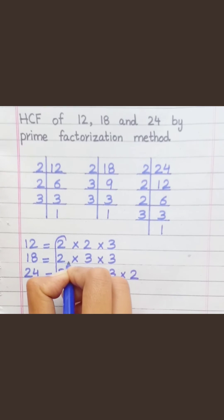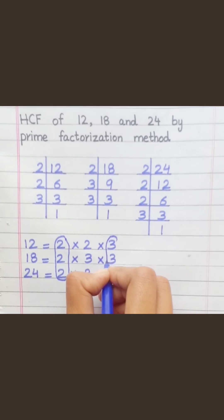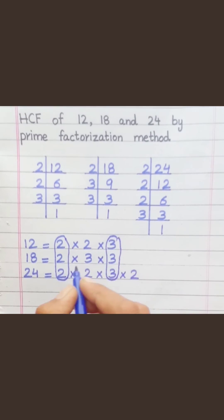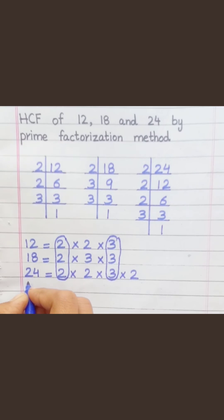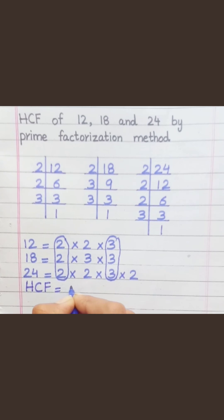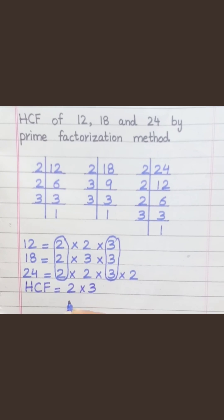Loop the factors that are common to all of the given numbers. HCF equals 2 multiply 3, equal 6.